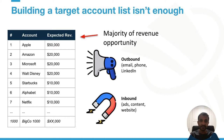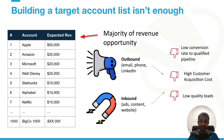It generally all boils down to some combination of inbound and outbound funnels, but what if you're not getting them to convert? Just because you're doing ABM doesn't necessarily mean you'll magically alleviate the common B2B funnel problems such as low conversion rate to qualified pipeline, high customer acquisition costs, and low quality leads.